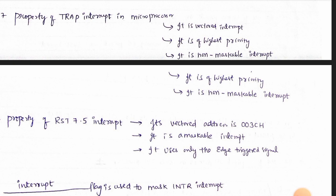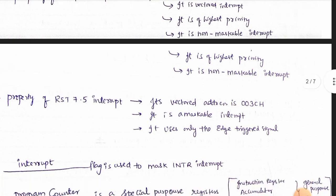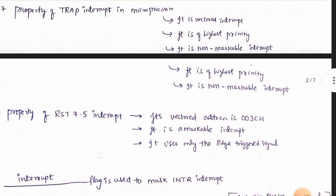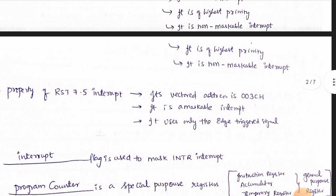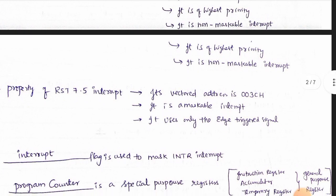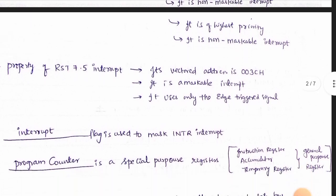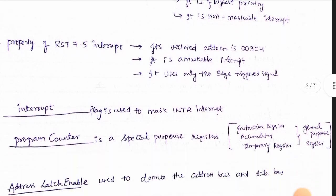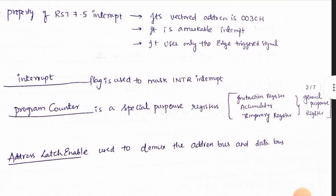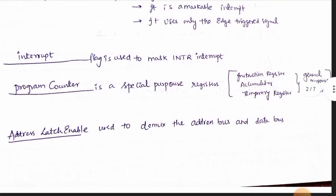Use the property of RST 7.5 and use the vector address. The 9th and 10th points are also important.